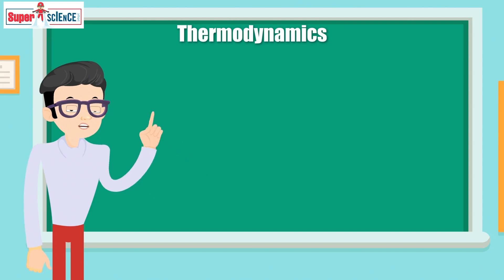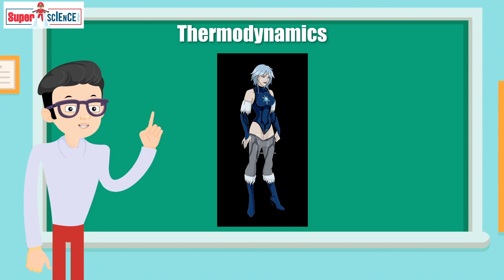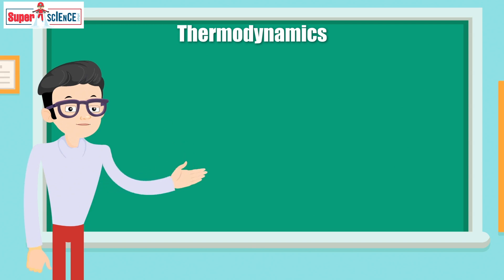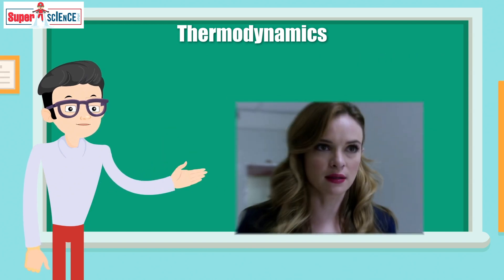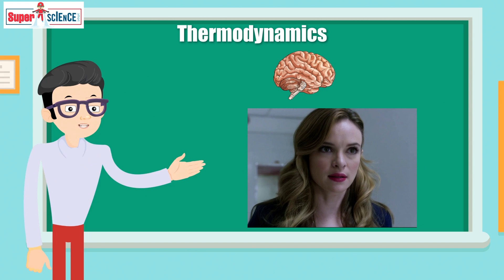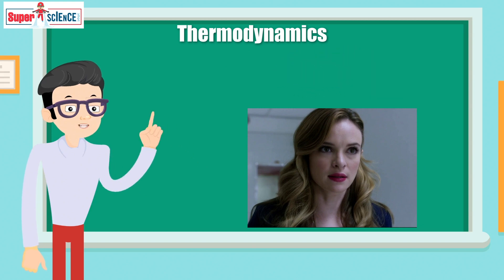You must have heard of Killer Frost, the deadly villain turned hero who won the hearts of the residents of Central City as a member of Team Flash. Her alter ego, Dr. Caitlin Snow, is a genius scientist, which is very convenient since today we are going to look at the science behind Killer Frost.